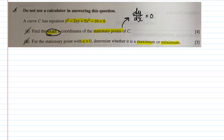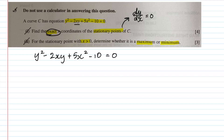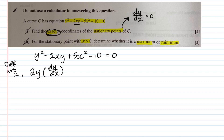For the first part, we use implicit differentiation because we have terms like xy together, so we can't just do a simple dy/dx directly. Rewriting the equation: y² − 2xy + 5x² − 10 = 0. Differentiating y² with respect to x gives 2y·(dy/dx). Remember, you are always differentiating with respect to x, which is why the dy/dx appears.